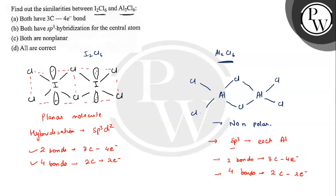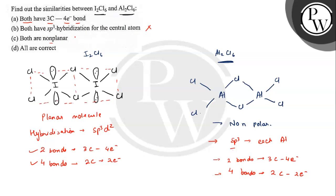Now we will check the options. Option A says both have three-centered four-electron bonds. Option B says both have Sp3 hybridization for the central atom. Option C says both are non-polar, and option D says all are correct. As we can see, both are not Sp3 hybridized — option B is incorrect. Option C is also incorrect because I2Cl6 is a polar molecule, not non-polar.